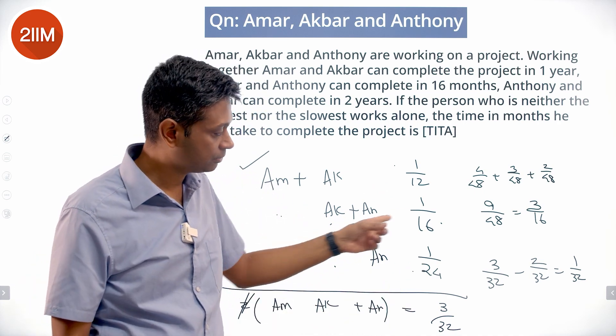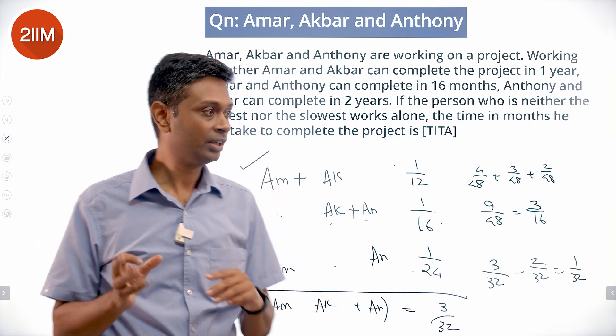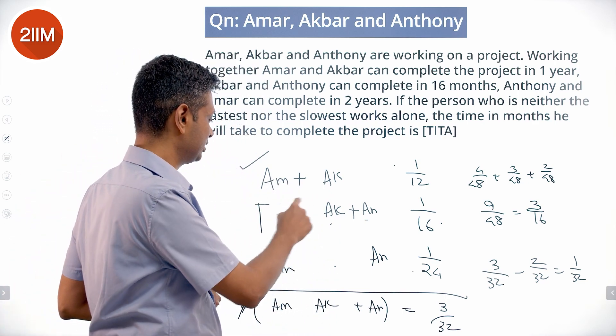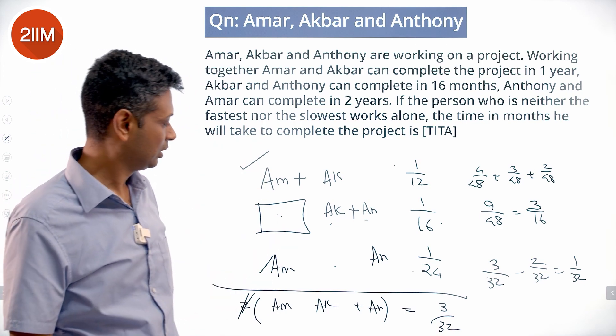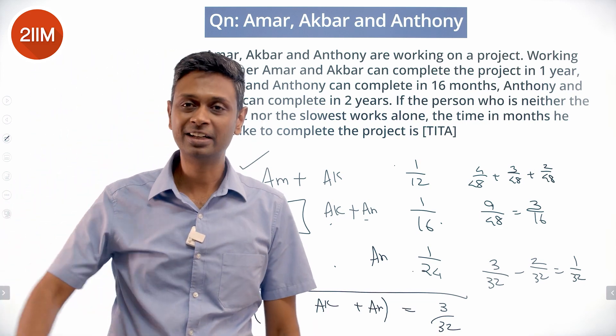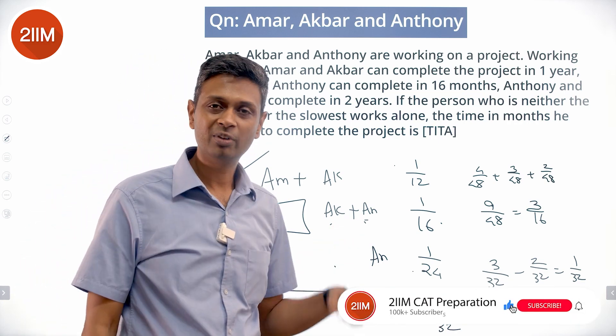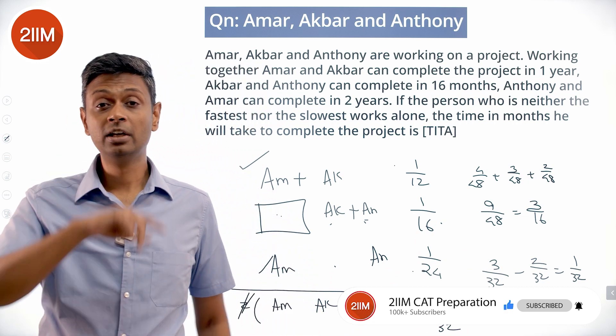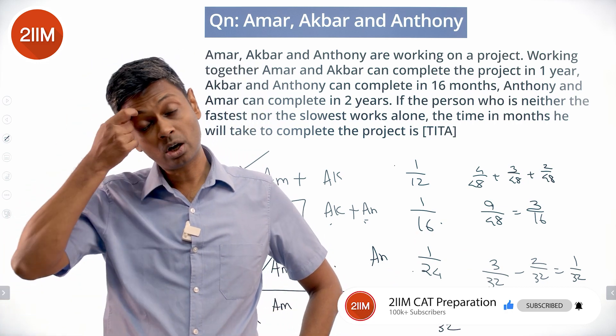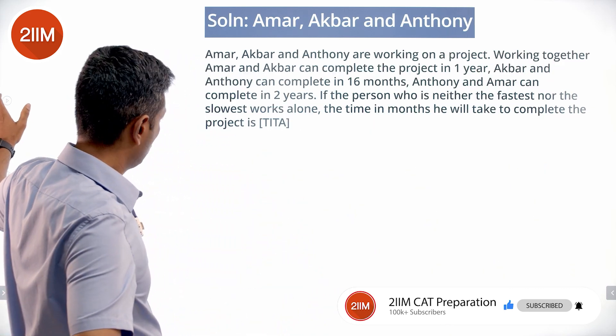The middle number is where the slowest and fastest are working together, meaning the middle-speed person is the missing guy. So we want to find Amar. Add everything up to get 2 times (Amar + Akbar + Anthony), divide by 2 to get Amar + Akbar + Anthony, then subtract to get Amar, which is 1/32. So to finish the task, Amar will take 32 months.